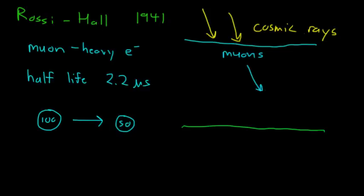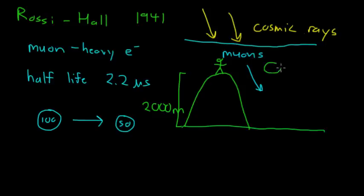Now what Rossi and Hall did, and this was done by more people after this to higher accuracies, was they said, alright, we're going to go up on top of a mountain, and maybe this mountain is something like 2,000 meters high. And we're going to measure how many muons pass by us. So they measured how many muons are up here.